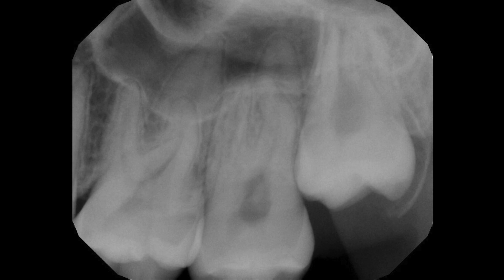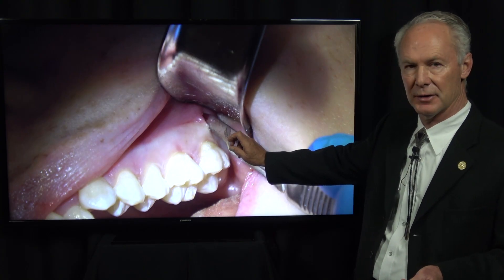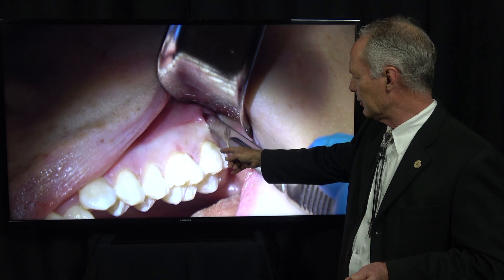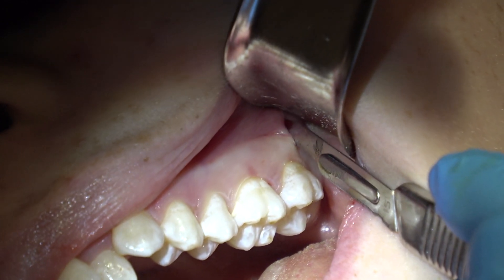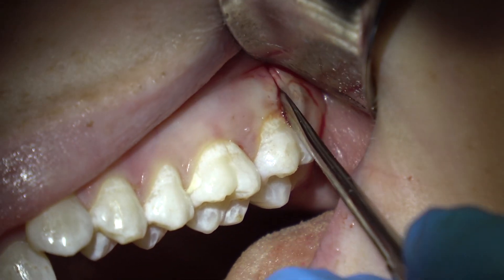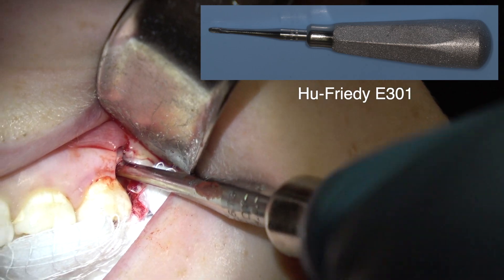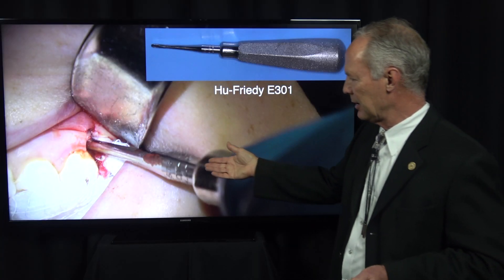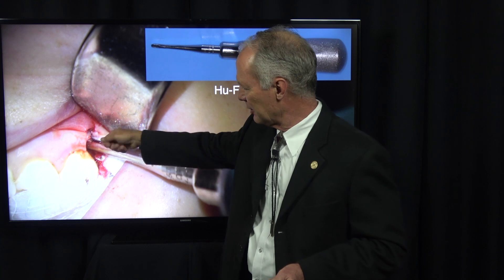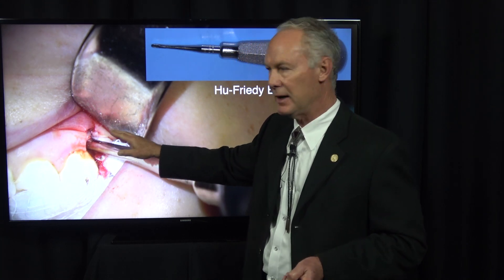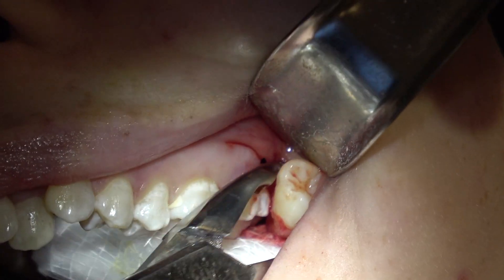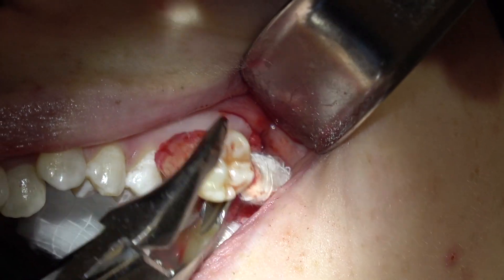Now I'm removing the maxillary wisdom teeth. I gave an intraligamental injection on this wisdom tooth also. Vertical incision on the distal buccal of the second molar all the way down to non-keratinized, non-attached gingiva, then across — making an incision across the distal of the second molar and then around the facial. I'm elevating the flap with a periodontal periosteal elevator, then placing that periosteal elevator between the wisdom tooth and the second molar and just torquing it to create space and place the E301 elevator. Be sure you always block the airway with a 2x2.